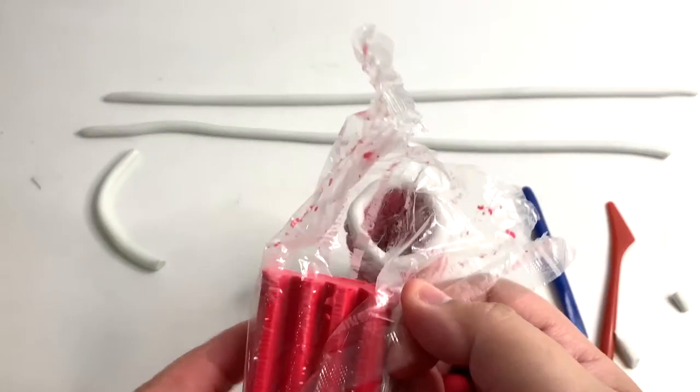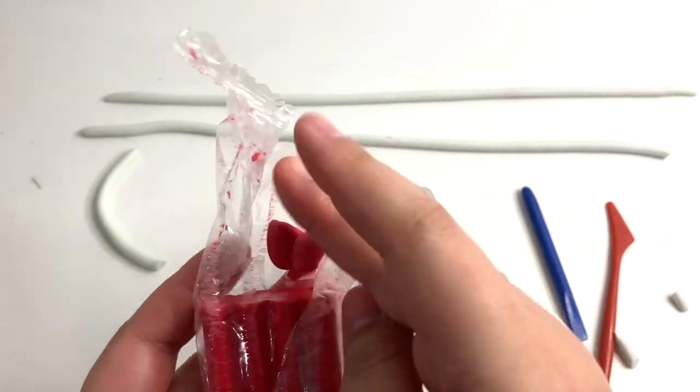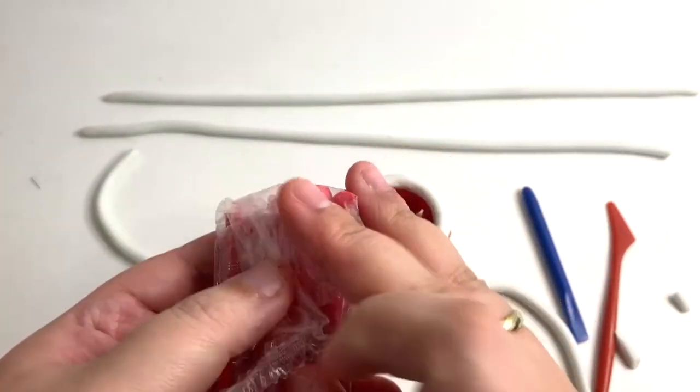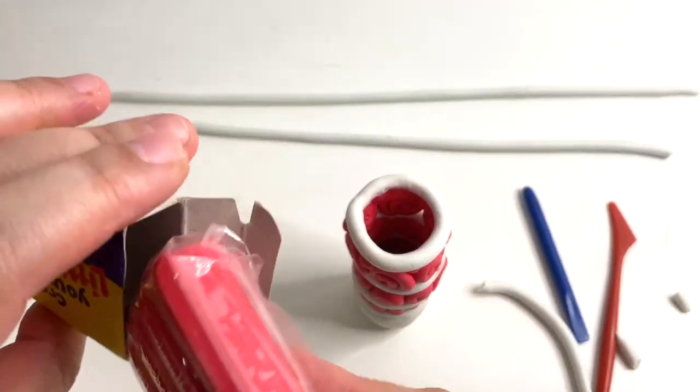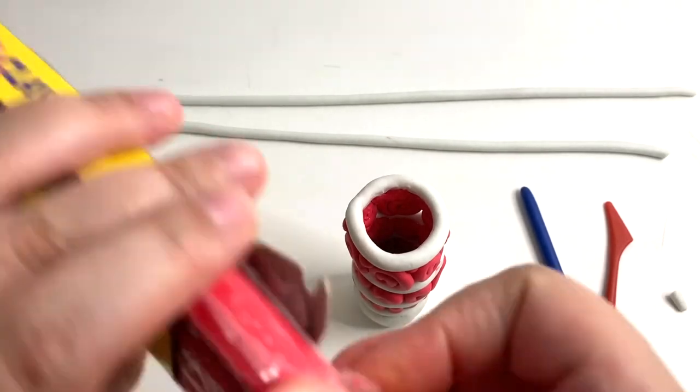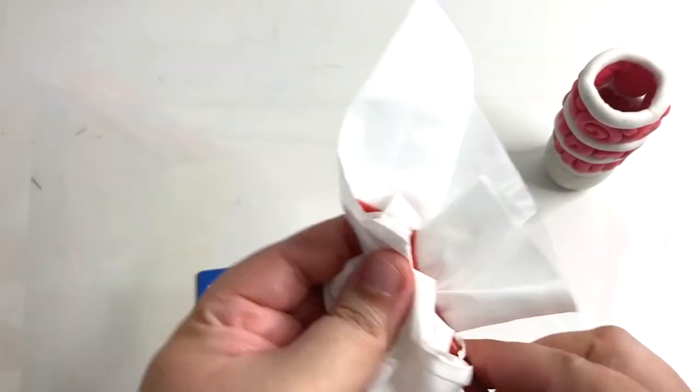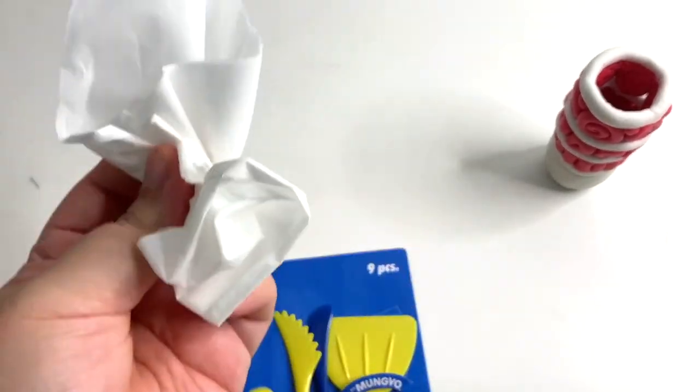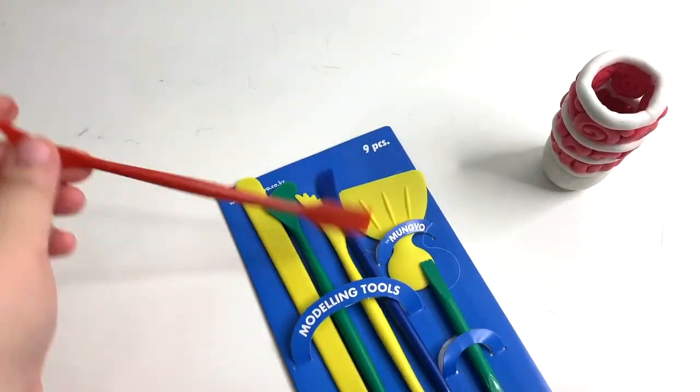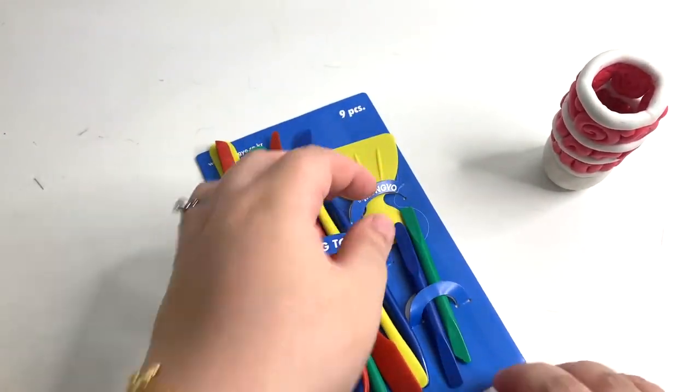Once you are done, keep all the remaining pieces of plasticine back in their respective packs, according to their colours. Wrap them nicely and slot it back inside the box. Use a piece of tissue to wipe all the used tools and keep them back in the pack. Remember to wipe your table too!